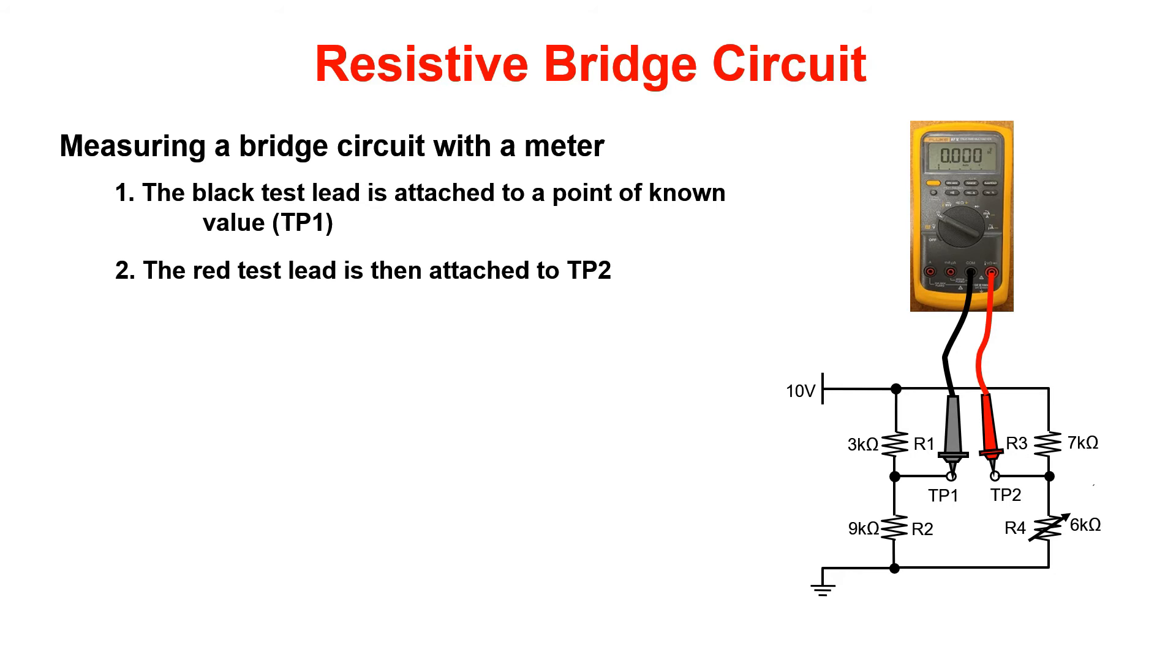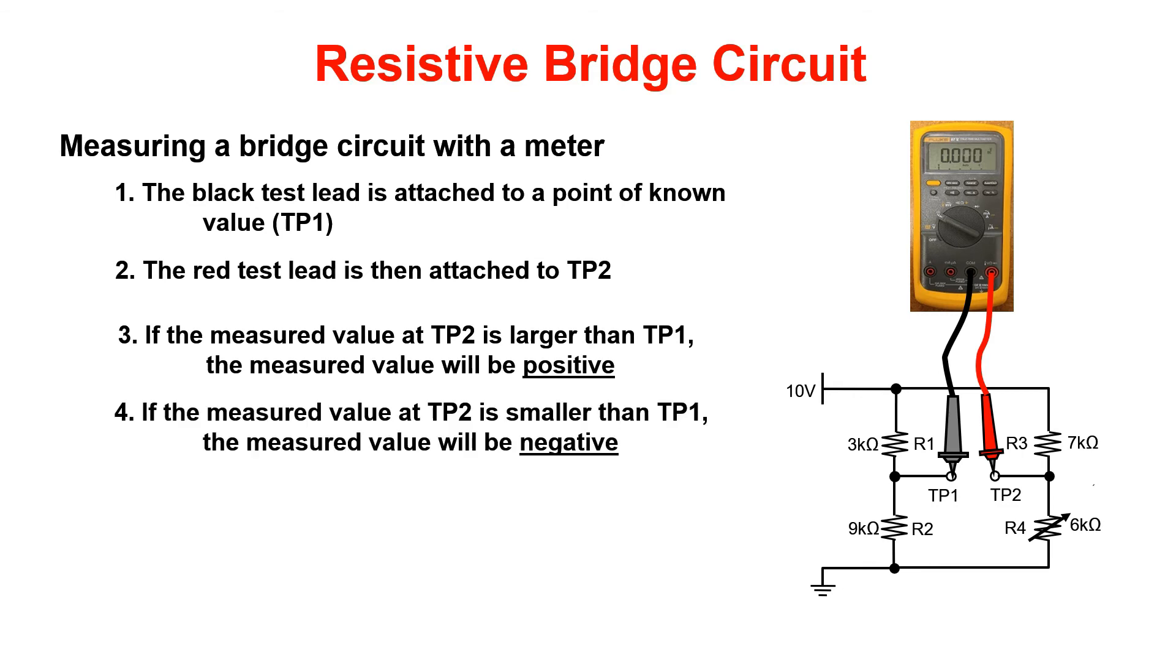We do this by subtracting the unknown side from the known side, or TP2 minus TP1. If the measured value at TP2 is larger than TP1, the measured value will be positive. If the measured value at test point 2 is smaller than test point 1, the measured value will be negative. If the values at TP2 and TP1 are equal, the bridge circuit is balanced.